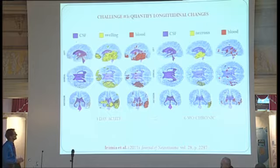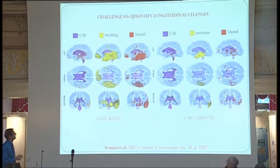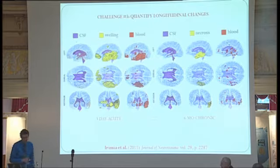We have adopted a semi-automatic segmentation approach in collaboration with our colleagues at the University of Utah, led by Dr. Guido Garrick. We have performed quantification of longitudinal changes based on these semi-automatic methods. We are able to segment the cerebrospinal fluid, swelling, and blood that occur in the acute case in these TBI patients, and to localize and characterize the type of lesion in each case. At six months after injury, we are able to characterize the necrosis and bleeds still present in the brain as well as the changes that have occurred between the two time points.